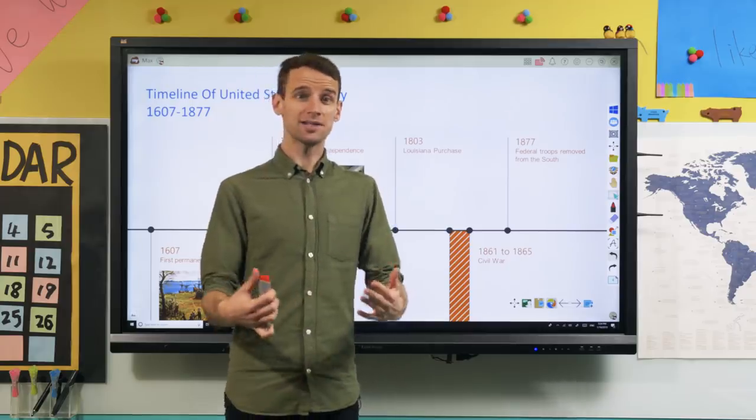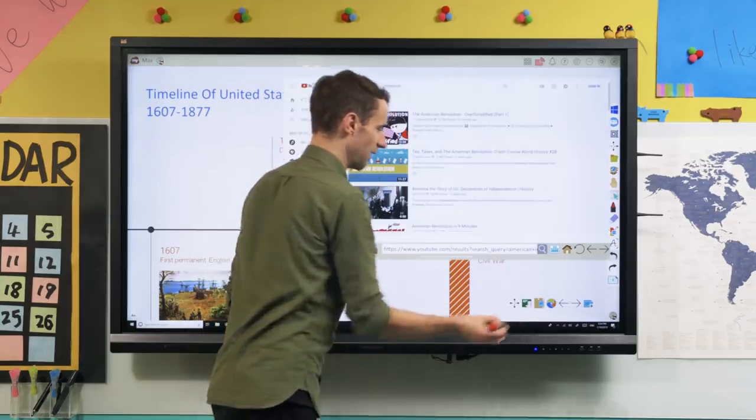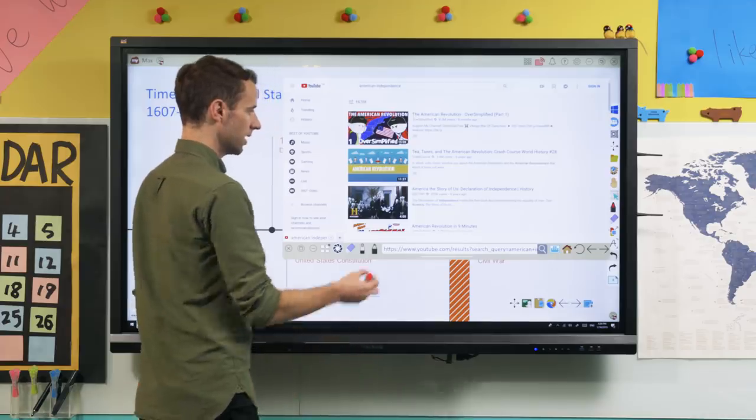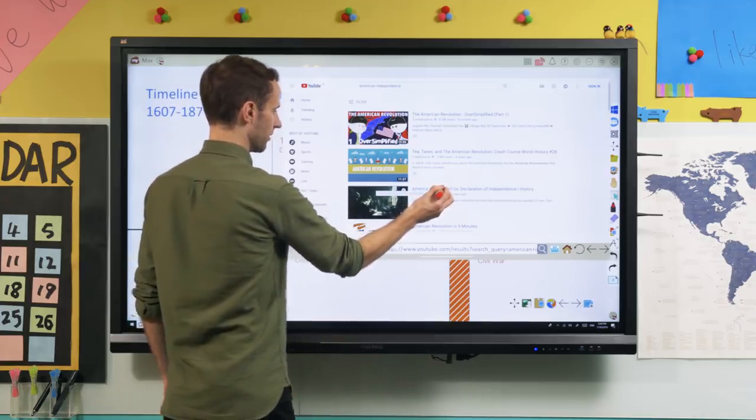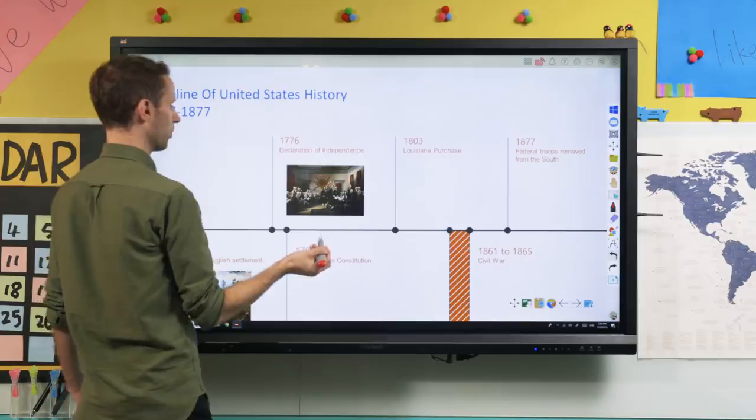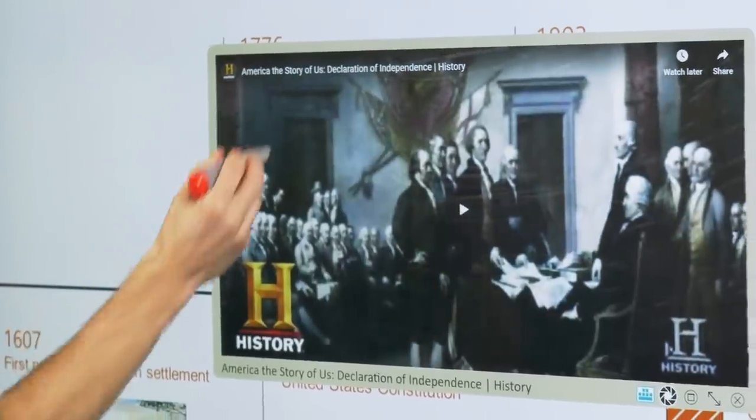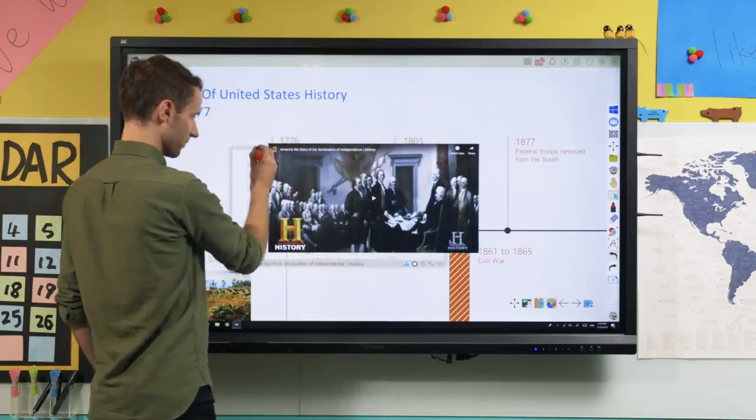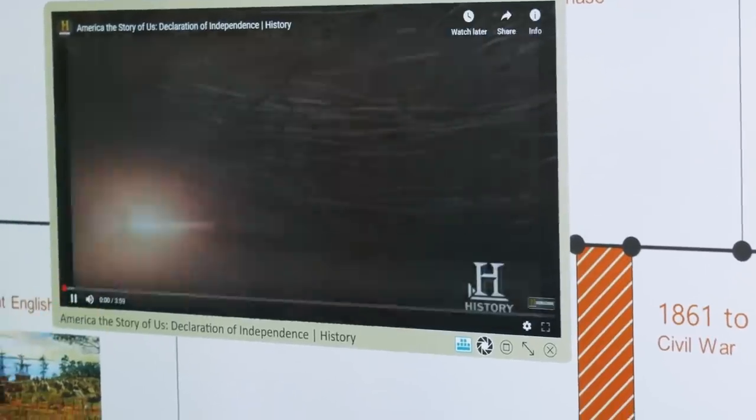But anytime I decide I want some video, I can go back to the browser. I have YouTube here and I can just select whatever video I would like and then drag that onto the whiteboard environment. From there, it's easy to move around this video and then I can just click play when I'm ready.